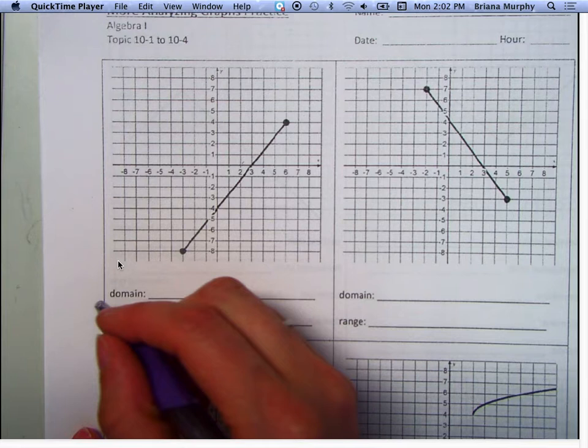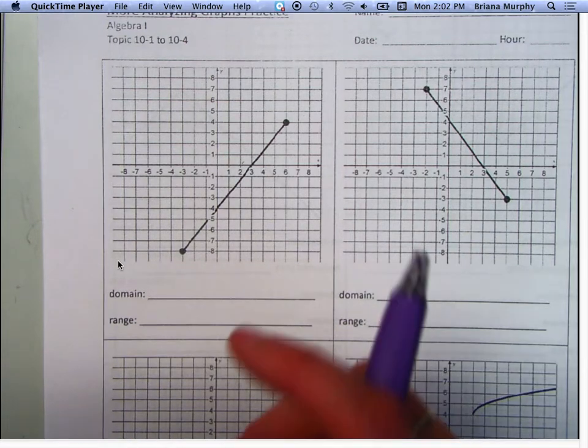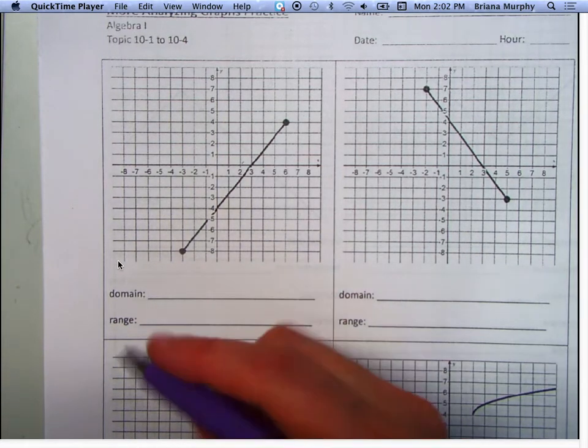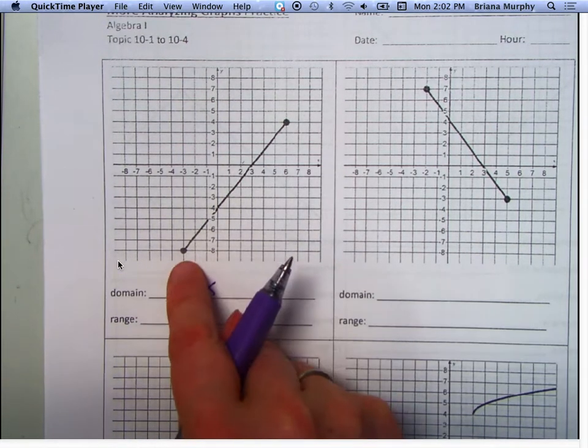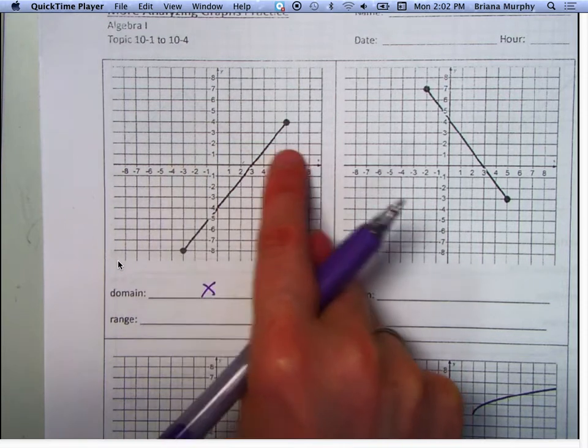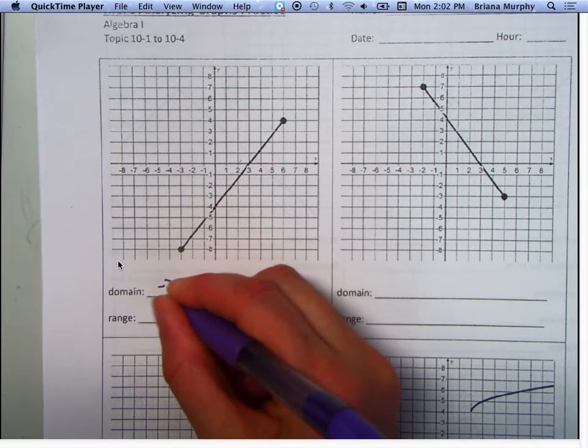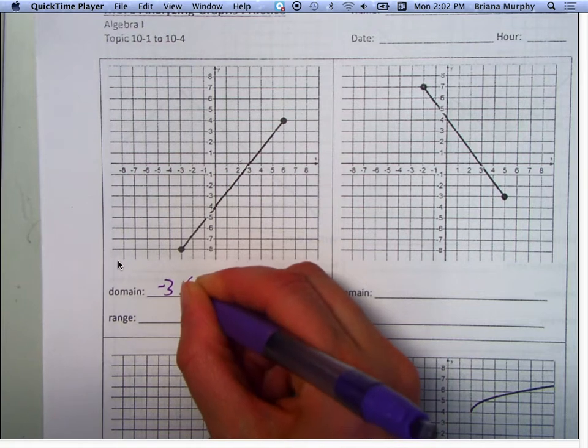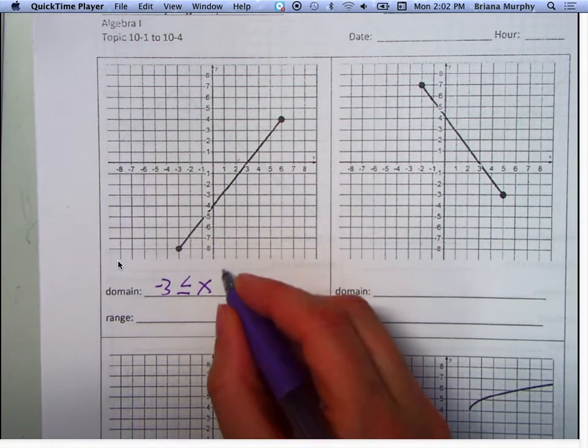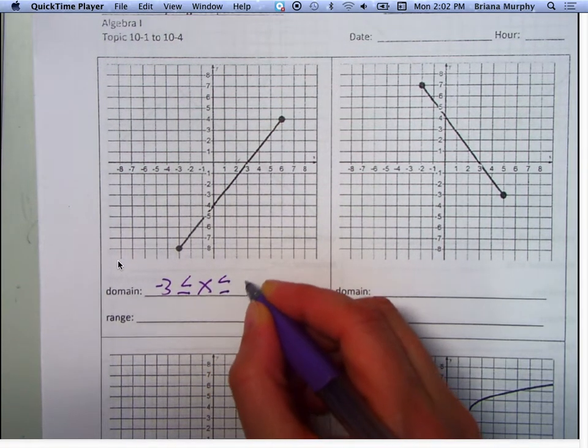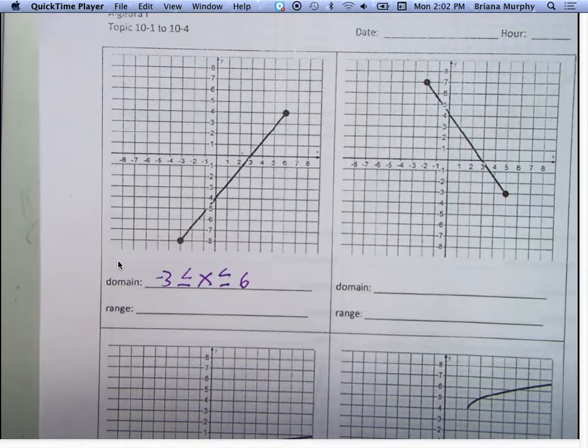So the domain is the X values that this segment could include. So the domain, X has to be between what two numbers? Negative 3 and 6. Okay, so we say negative 3, X has to be greater than or equal to it, and X has to be less than or equal to 6.